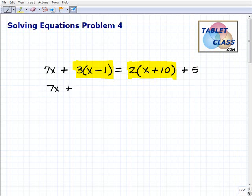So I'm going to rewrite the equation, 7x, but here I'm going to use the distributive property to multiply 3 by x and negative 1. So I'm going to get 3x minus 3 equals 2x plus 2 times 10 is 20 plus 5. So before I move on, kind of double checking myself. Everything seems to make sense.